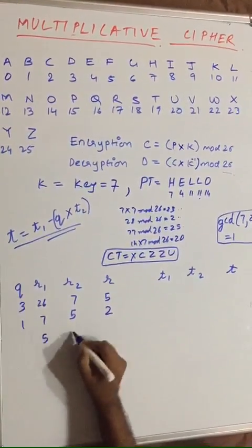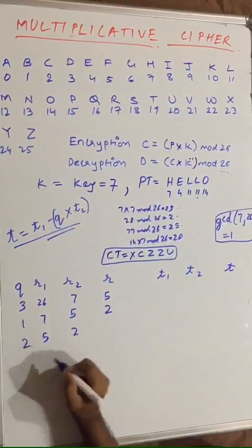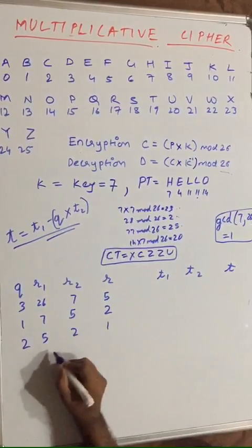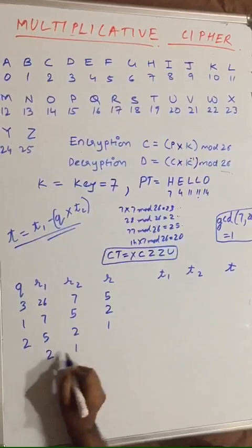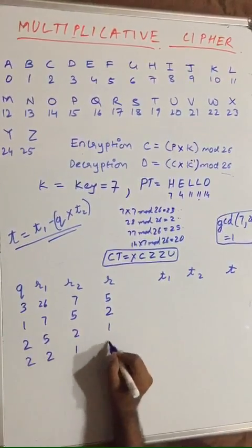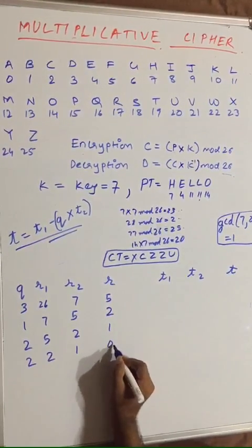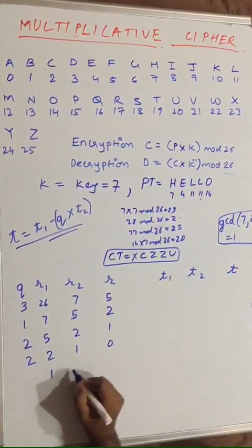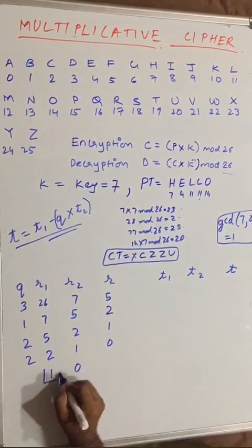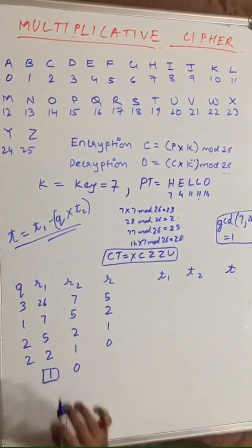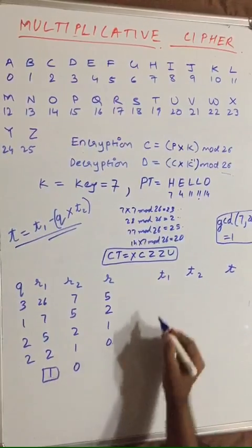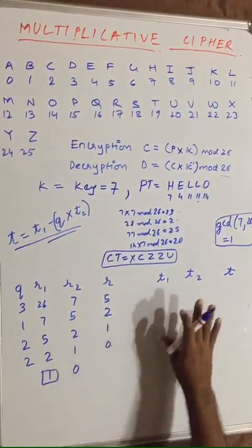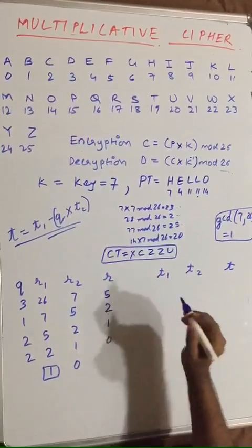Continuing: 5 ÷ 2 gives Q=2, remainder 1. Shifting again: R1=2, R2=1; 1 × 2 = 2, remainder 0. We stop when the remainder reaches 0, and the row with remainder 1 gives us the value corresponding to T1 as the inverse of 7.